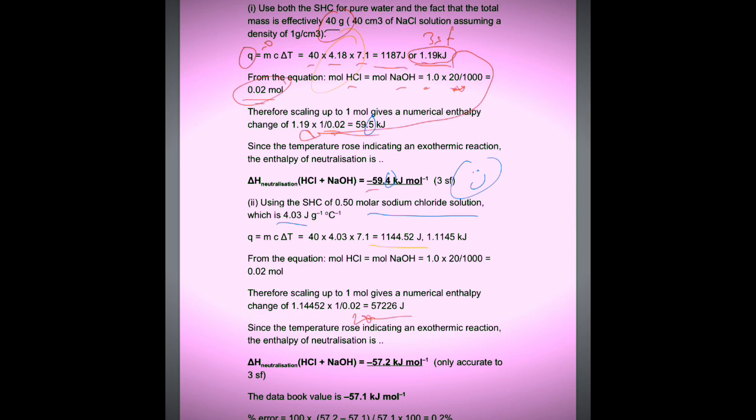That's 57,226 joules, or 57.2 kilojoules per mole. The data book value is 57.1 kilojoules per mole, which using my rather rudimentary polystyrene cup from the canteen and data logger gives us an error of only 0.2%. Well done to us.